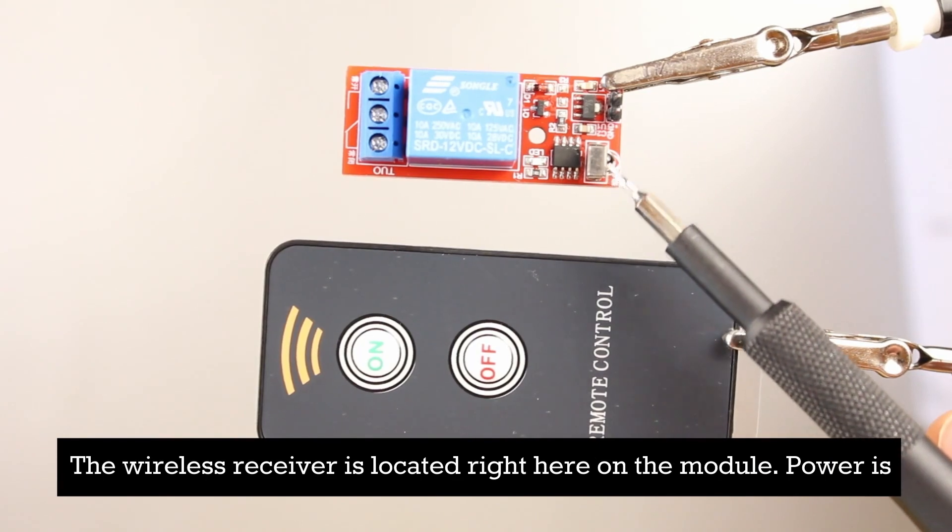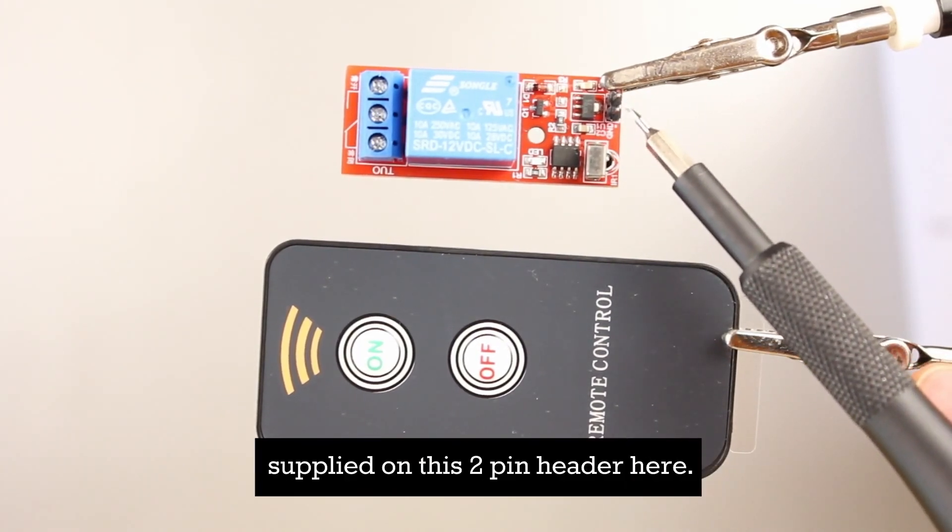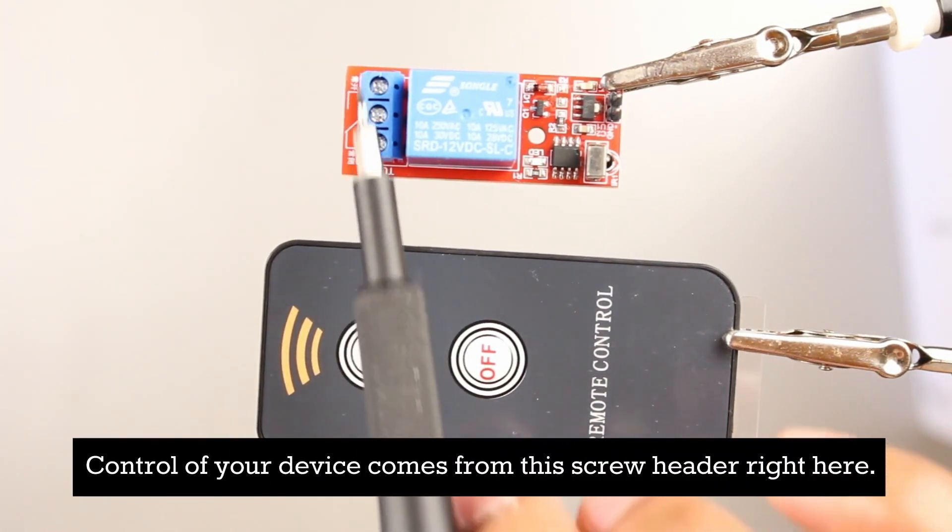The wireless receiver is located right here on the module. Power is supplied on this two pin header here. Control of your device comes from this screw header right here.